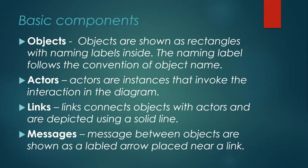Links are the lines connecting objects, representing the relationships between them. Messages are the responses or requests passing from object to object, and they are represented through notations. Those are the basic components of a collaboration diagram.